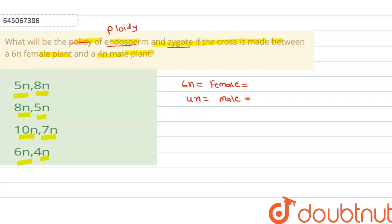If we talk about ploidy of this male and female, the ploidy is 3n and 2n - 2n for male and 3n for female.